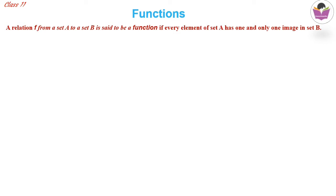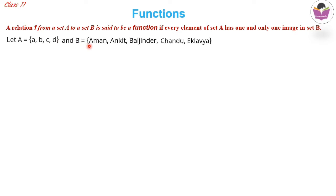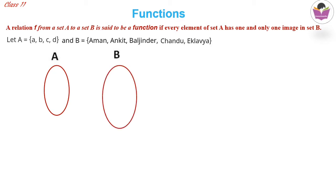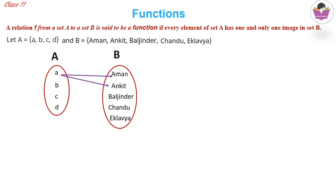Let's discuss functions through an example. Let A = {a, b, c, d} and B = {Aman, Ankit, Baljinder, Chandu, Egalavia}. We represent these as oval shapes using an arrow diagram to depict a relation. Here a is related to Aman and also to Ankit, b is related to Baljinder, and c is related to Chandu.